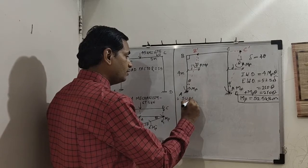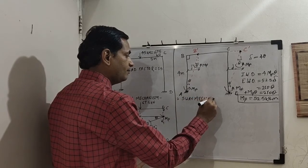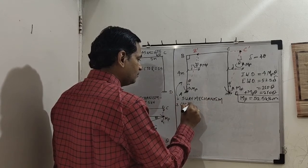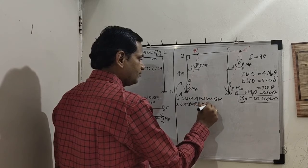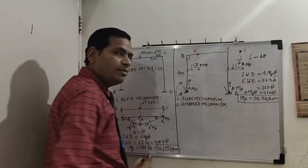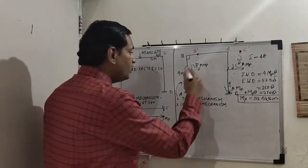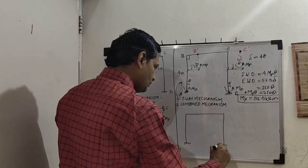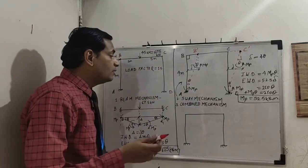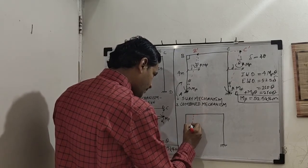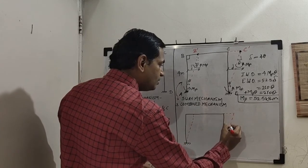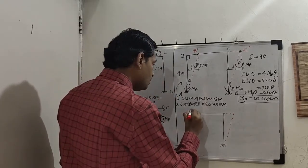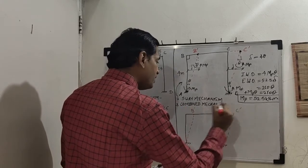The second step — sway mechanism — is complete. Now the third step is the combined mechanism. In the combined mechanism, we combine sway and beam mechanisms. We redraw the frame showing the sway of the frame, then introduce the beam mechanism on the displaced beam B'C'.